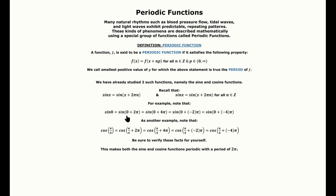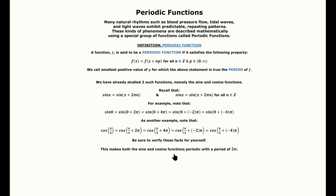On the unit circle, sine of 0 equals sine of 0 plus 2pi equals sine of 0 plus 4pi, and similarly sine of 0 plus negative 2pi, negative 4pi, and so on. The exact same holds for cosine. You can verify this yourself, and it confirms that both sine and cosine are periodic with a period of 2pi.